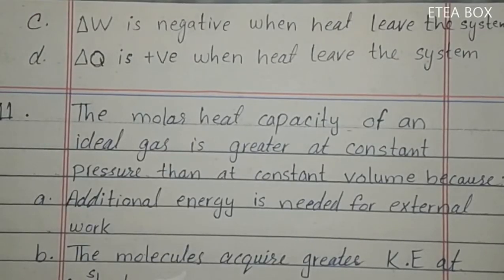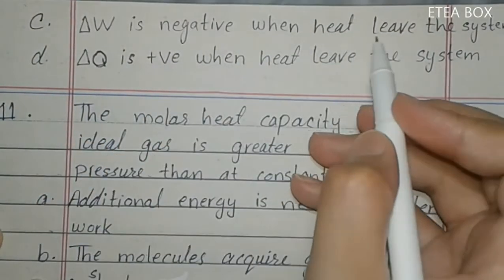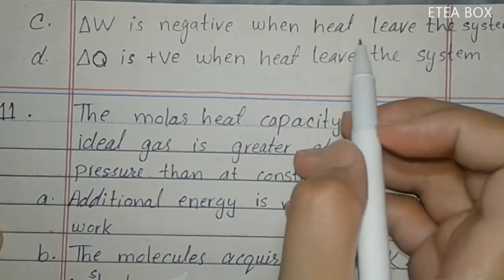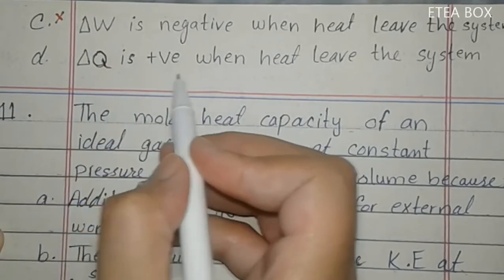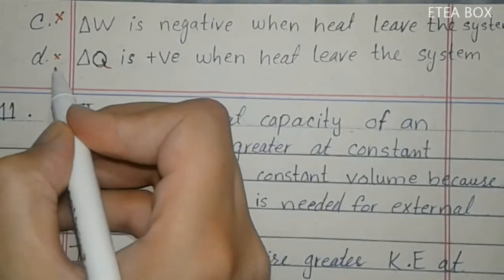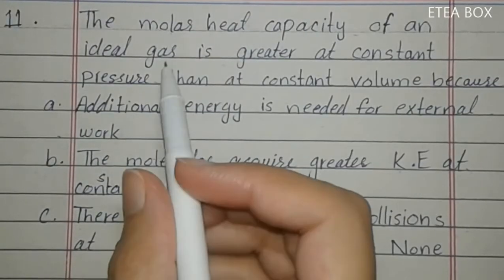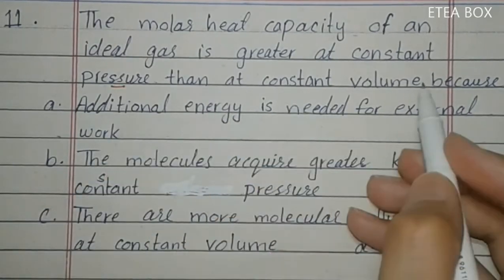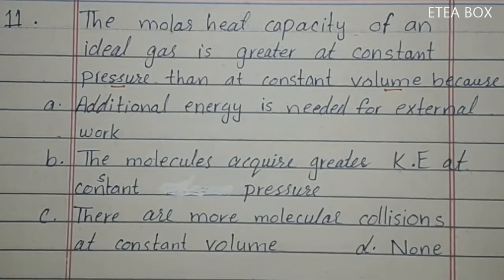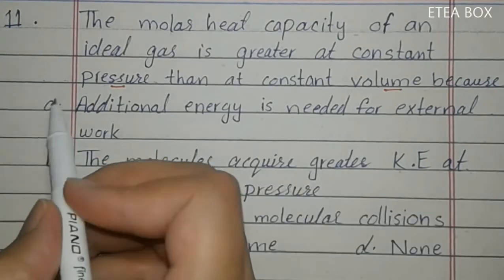Option C says work is negative when heat leaves the system — this is incorrect; work depends on expansion or contraction, not on heat leaving. Option D says heat is positive when heat leaves — this is incorrect; heat is negative when it leaves the system. Eleventh MCQ: the molar heat capacity of an ideal gas is greater at constant pressure than at constant volume because additional energy is needed for external work. So here option A is correct.